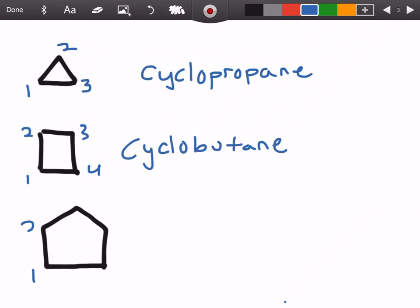Up next, we have one, two, three, four, and five total carbons, which is normally called pentane, but since it's cyclic, we have cyclopentane.